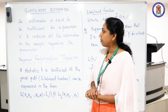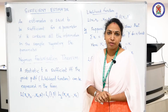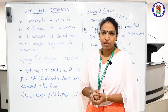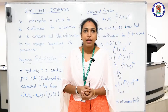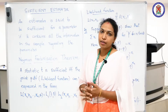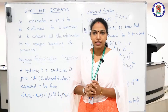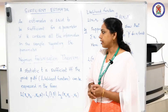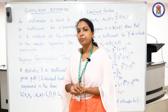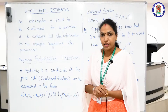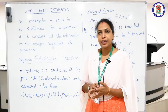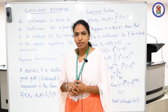The first one we are going to discuss is the sufficient estimator. When do we call an estimator to be sufficient? An estimator is itself a random variable — it is a sample value — and if that estimator contains all the information about the population parameter, then we say that estimator is sufficient.